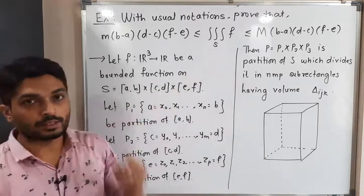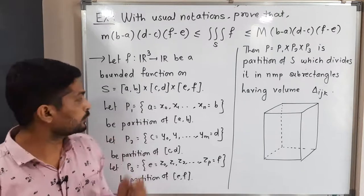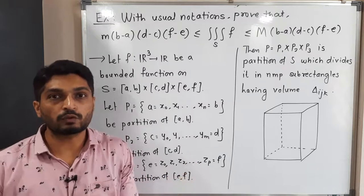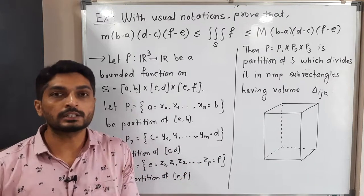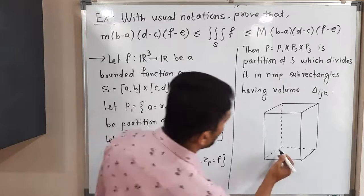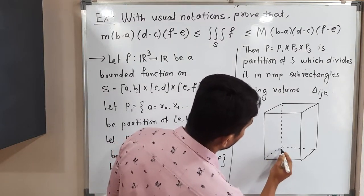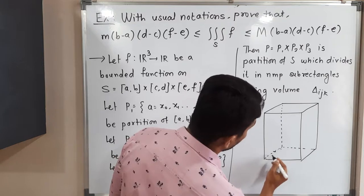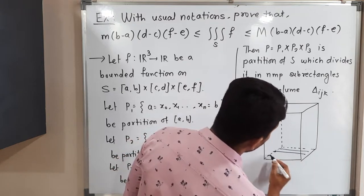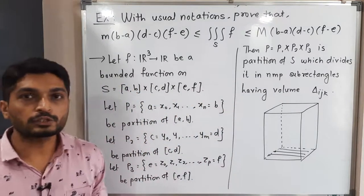To prove this, we will take partition P1 of the closed interval [a,b], which is a subset of ℝ. Because of that partition, this region will have some partitions — the cuboid will be divided in this way.